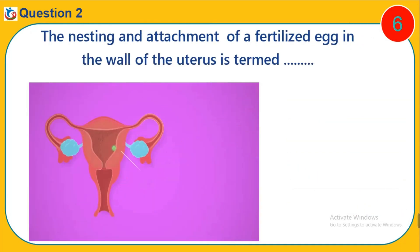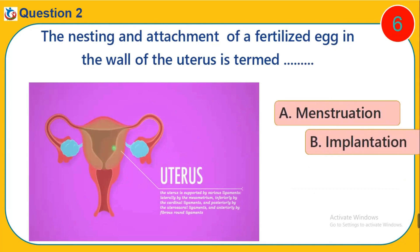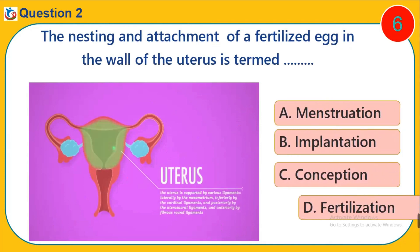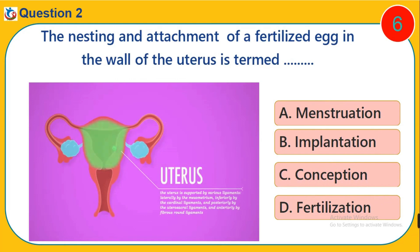Question 2. The nesting and attachment of a fertilized egg in the wall of the uterus is termed dash. A. Menstruation. B. Implantation. C. Conception. D. Fertilization.